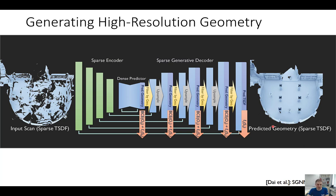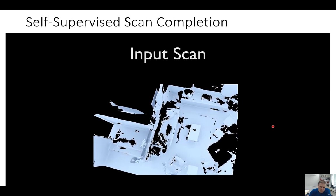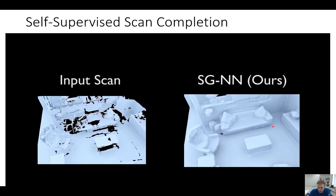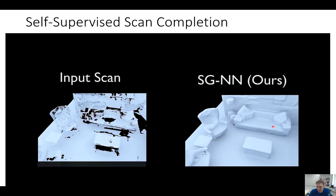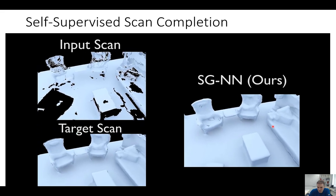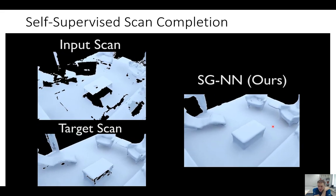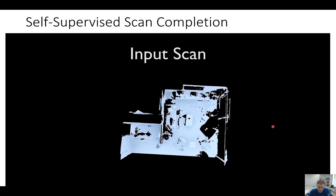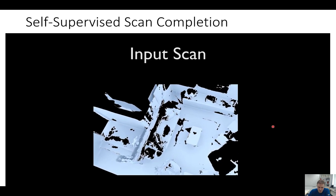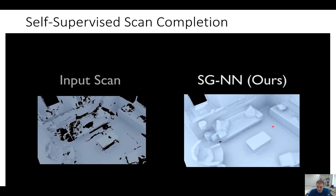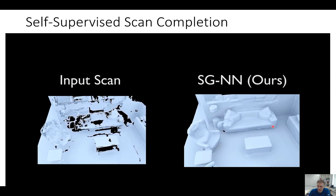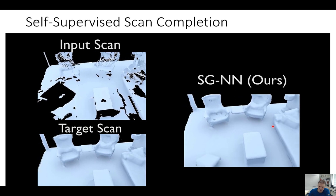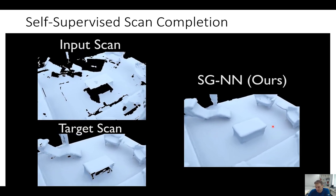Looking at the input partial scan and the reconstruction results of SGNN, these reconstructions actually look quite good. This was the paper we published last year at CVPR, and I would say it's still probably state-of-the-art in terms of output quality. We're getting very high-quality results, we only train on real scenes, we have the self-supervised masking idea, and this gives quite nice results.